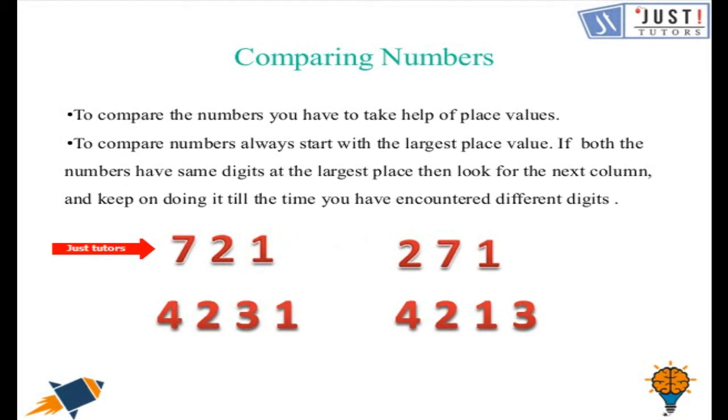Moving ahead, in the next example, we can see that comparing the largest column, we have same digits at the largest column. And what is the largest column here? Here it is thousands. And we have 4 at the thousands column. Moving ahead, we see we have 2 at the hundreds column. So let us move further.